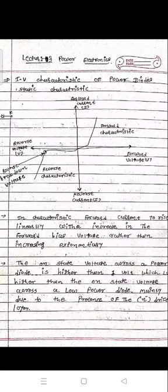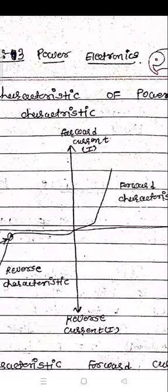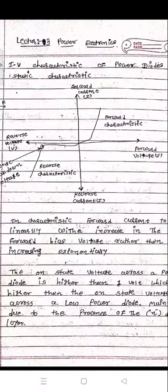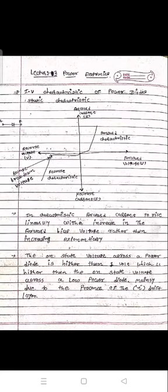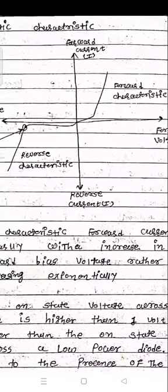Forward voltage is here, and forward current is here on the graph. Forward current will rise when a higher forward voltage is applied. The rise is linear — as forward current increases, forward bias voltage also increases. The on-state voltage across the power diode is higher than one volt, which is greater than the on-state voltage across a low-power diode.